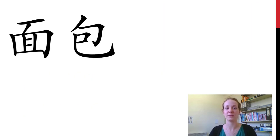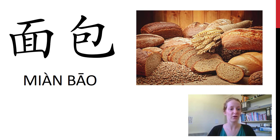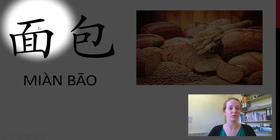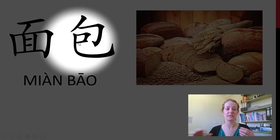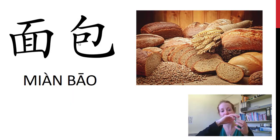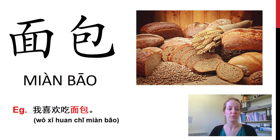下一个 — a different type of carbohydrate. 面包，面包 — this is bread. On the left-hand side we have 面 which means wheat, and 包 which means like a ball wrapped up — so it's a wheat ball literally. You might think of buns when you think of 面包. 你喜欢吃面包吗?